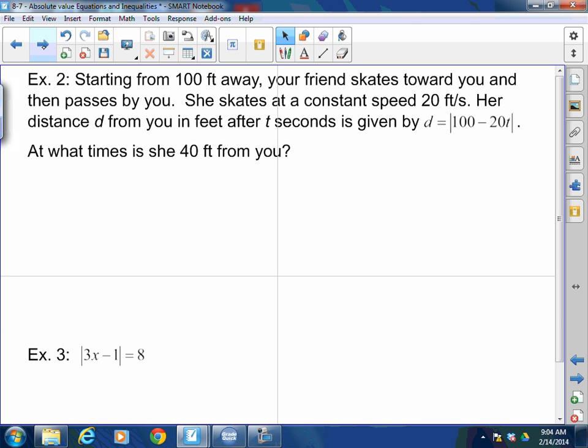Starting from 100 feet away, your friend skates towards you and then passes you. She skates at a constant speed of 20 feet per second. Her distance from you in feet after t seconds is given by the equation d = |100 - 20t|. At what times is she 40 feet from you? We're calling 40 feet. That's my distance. So 40 = |100 - 20t|.